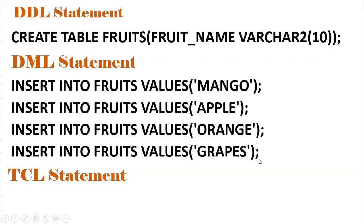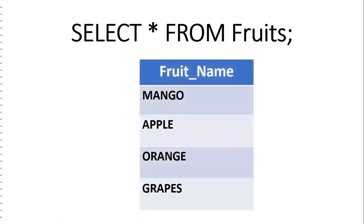These are DML statements, so an explicit commit is required - that's why we use TCL. By using commit, we can commit those transactions so that the data will be stored permanently. So DDL, DML, TCL - three statements have been covered. Now select is the data retrieval language. Select * from fruits will give mango, apple, orange, grapes. There are four records in the fruits table with the column name fruit_name.